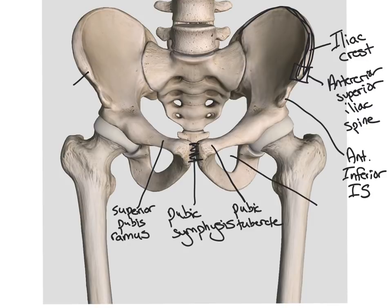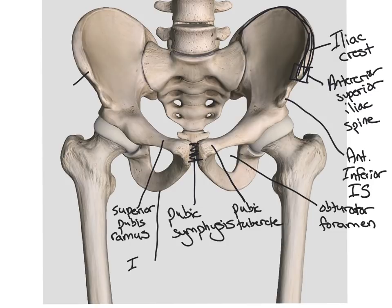The hole or opening joined between the pubis and the ischium is called our obturator foramen. And then on the very bottom point of our ischium we have our ischial tuberosity.